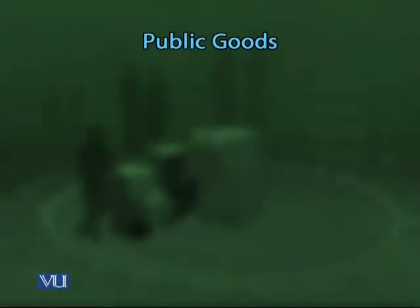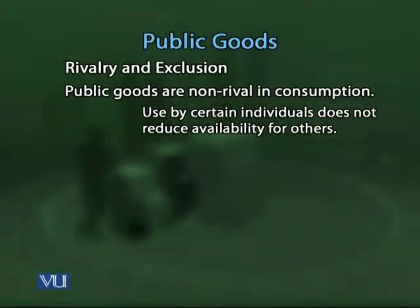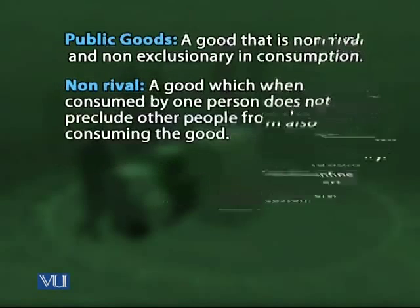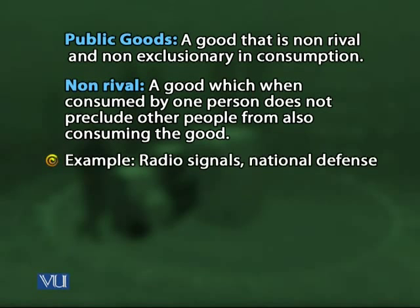Next we consider another source of market failure: public goods. A public good has distinguishing properties — its consumption is non-rival and also non-excludable. By non-rival consumption, we mean it is a good which, when consumed by one person, does not preclude other people from also consuming it.